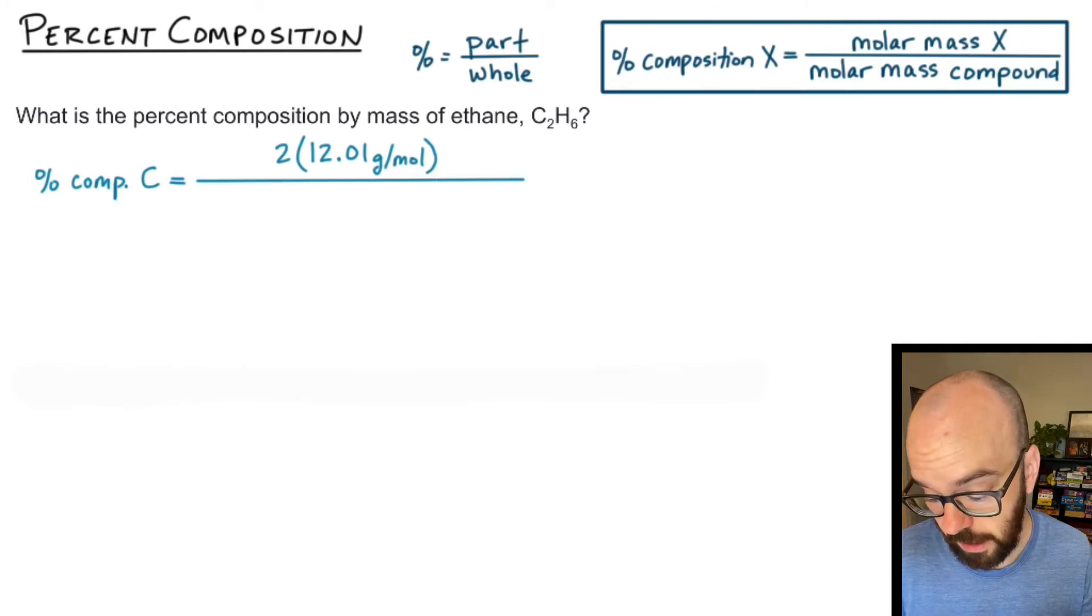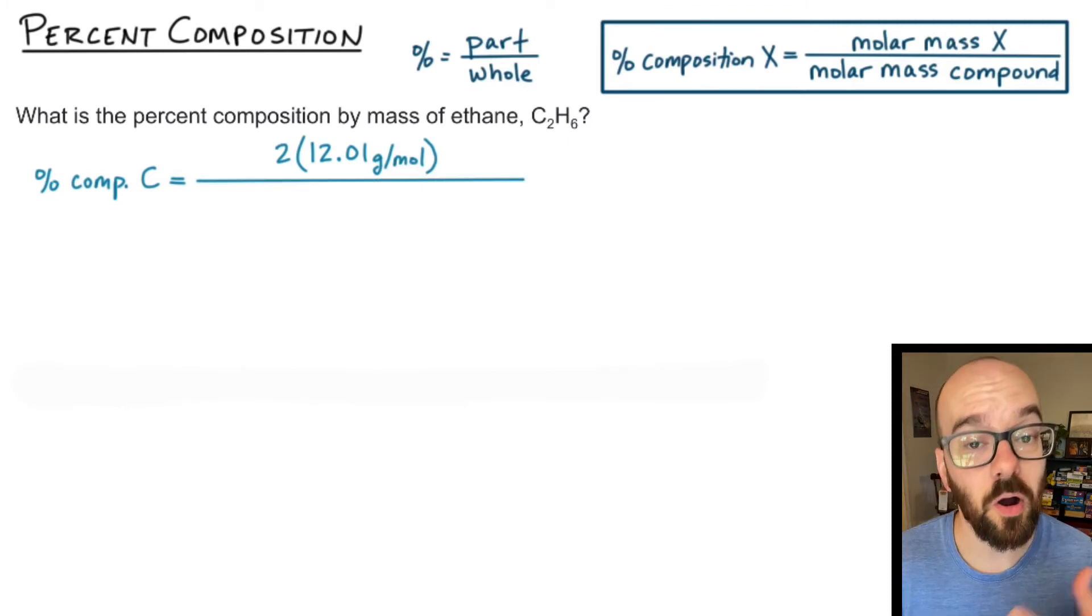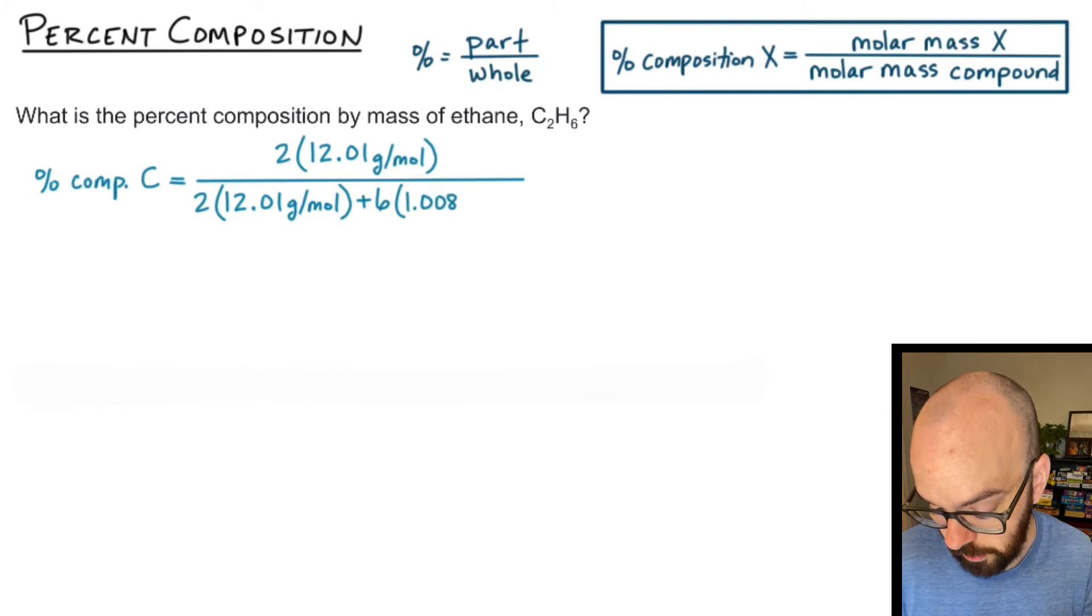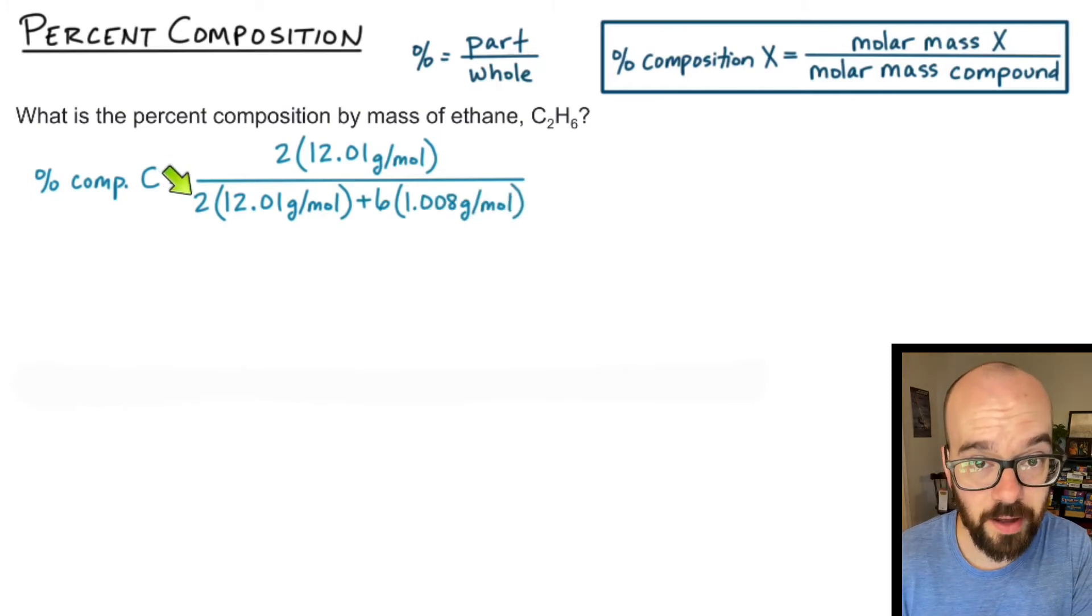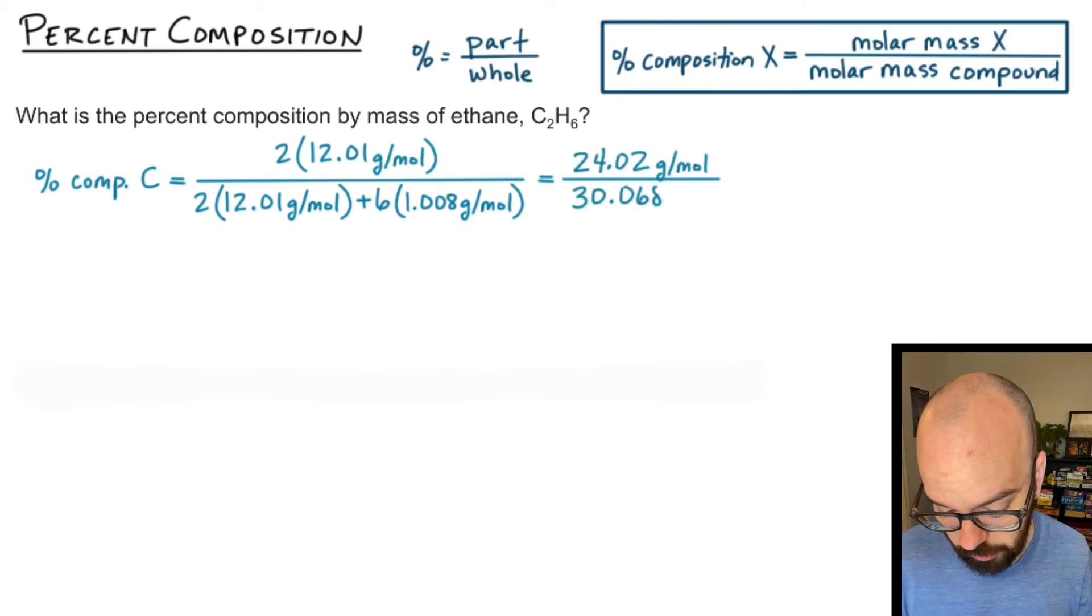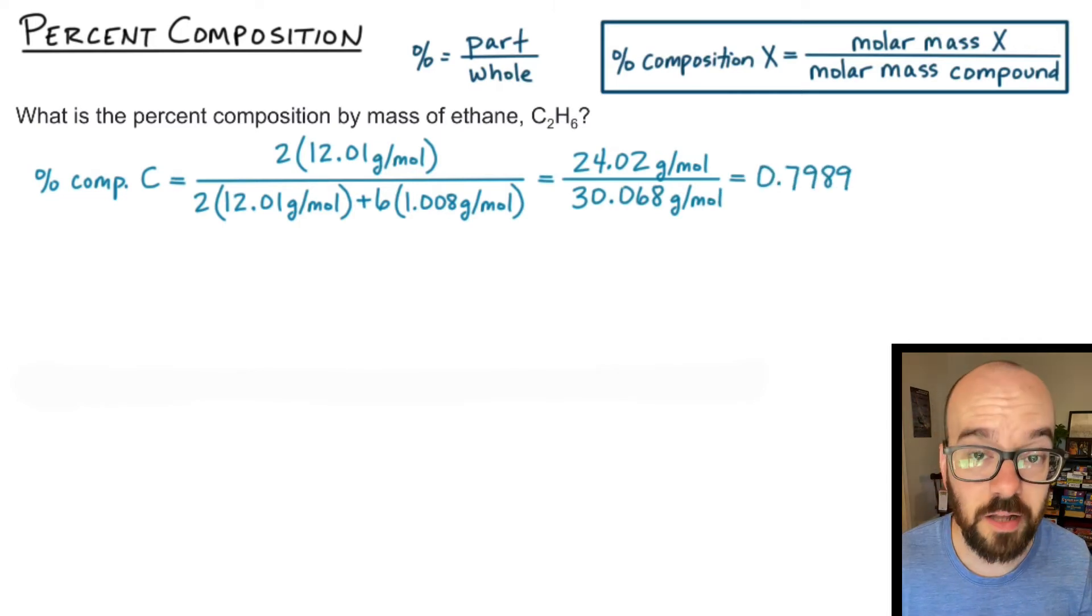In the denominator of the fraction I'm going to divide by the molar mass. If you already know the molar mass of the compound just write it there. I don't know the molar mass of ethane right now so I'm going to calculate it. That's going to be two carbons plus six hydrogens. So this denominator is now the molar mass of ethane. If you need help finding the molar mass of a compound check out my video on that. All right let's multiply this all out. I get 24.02 over 30.068.